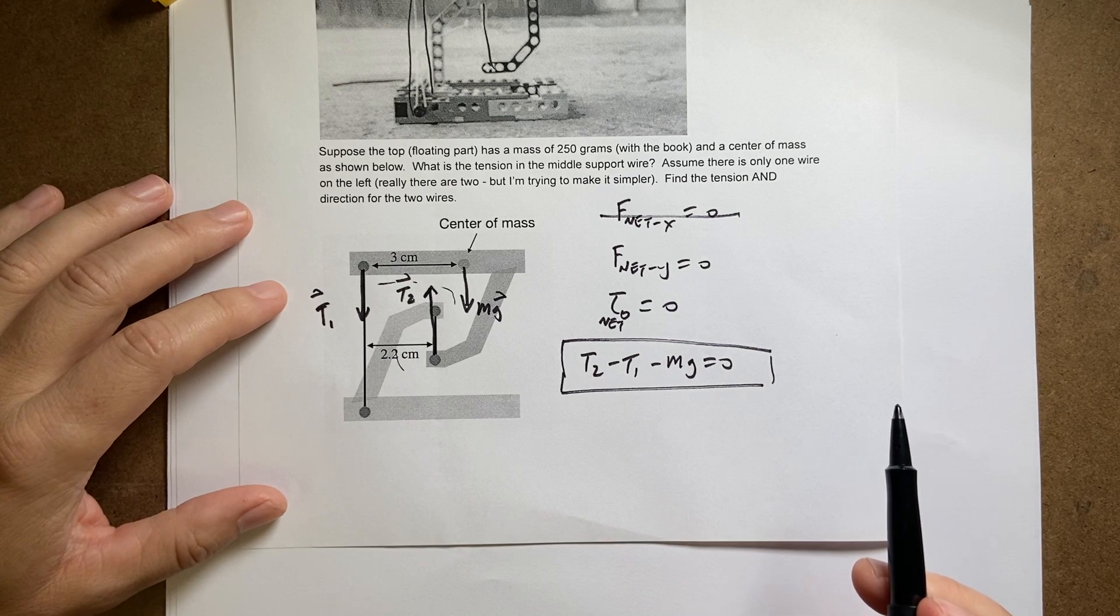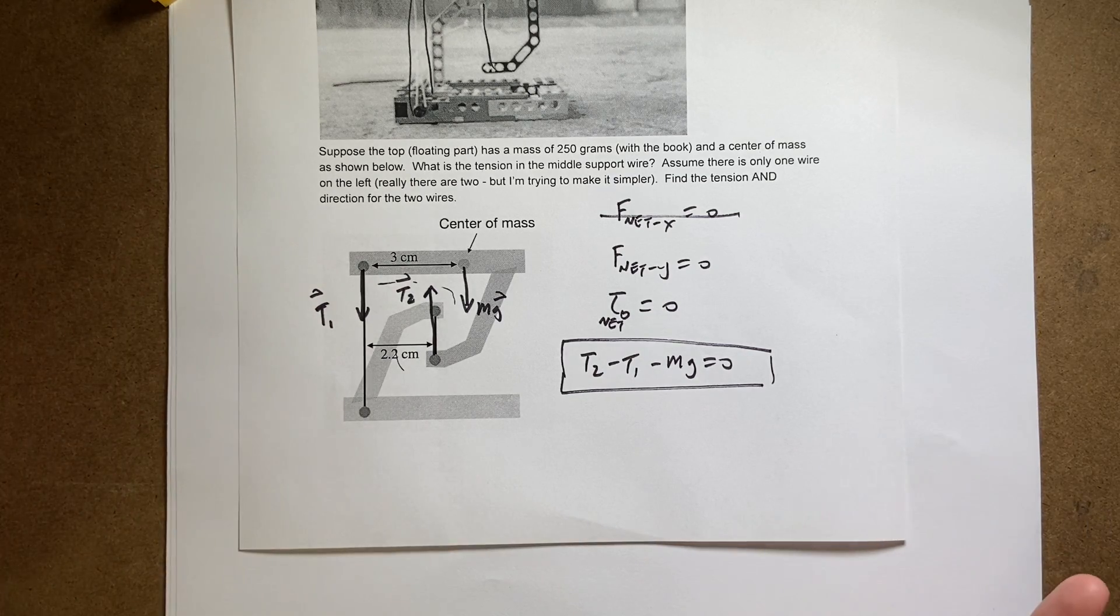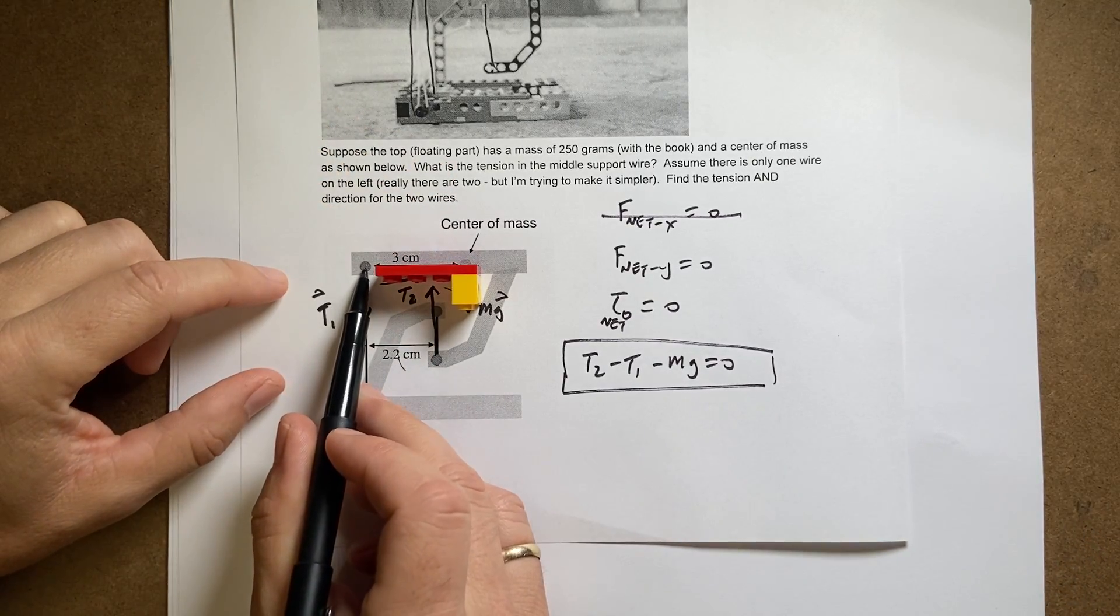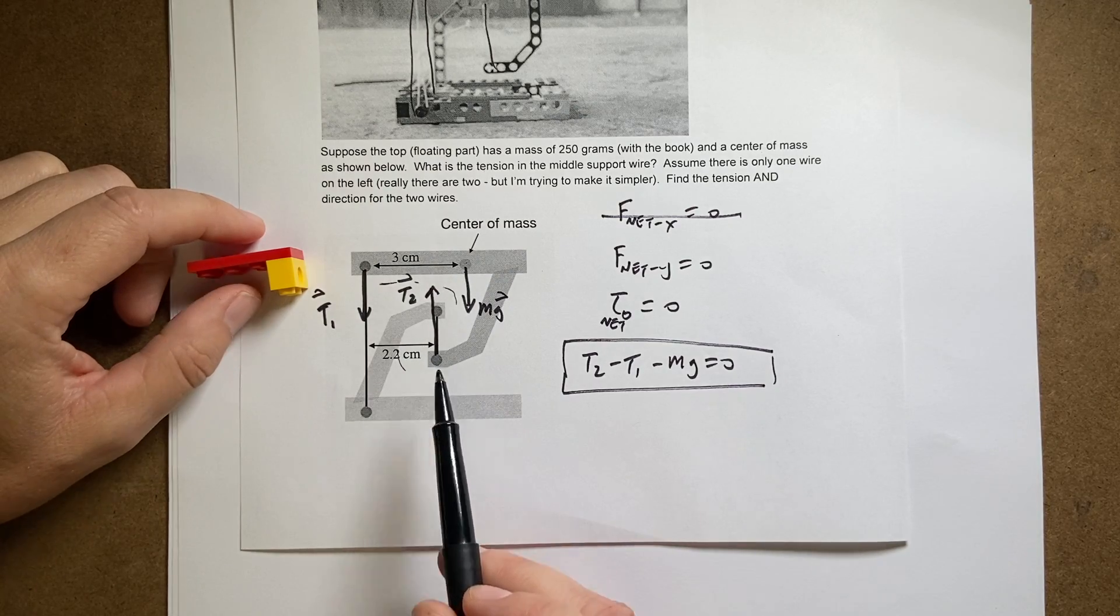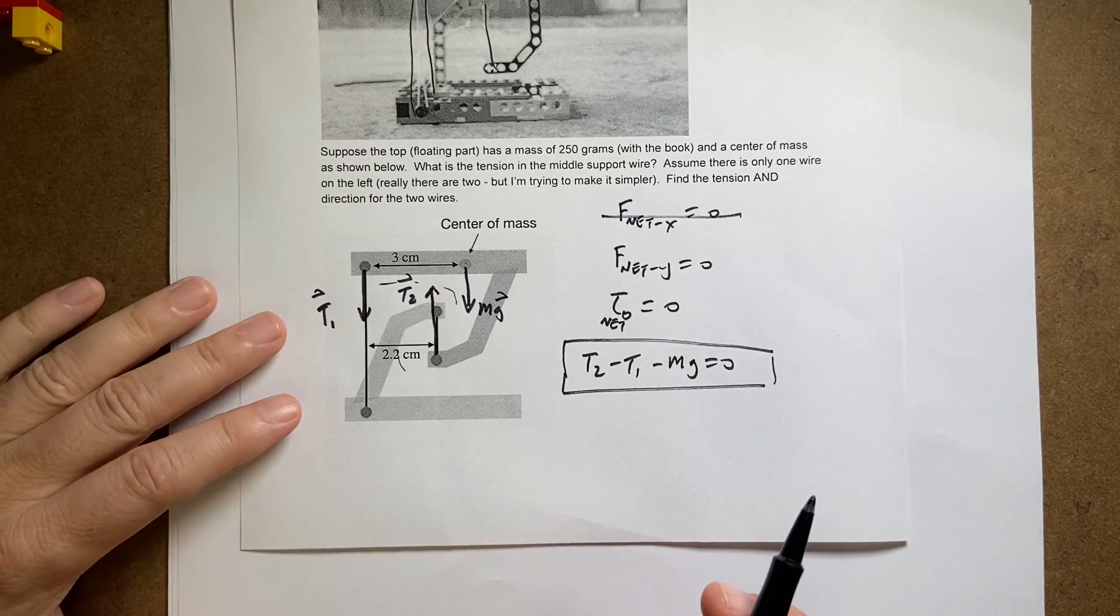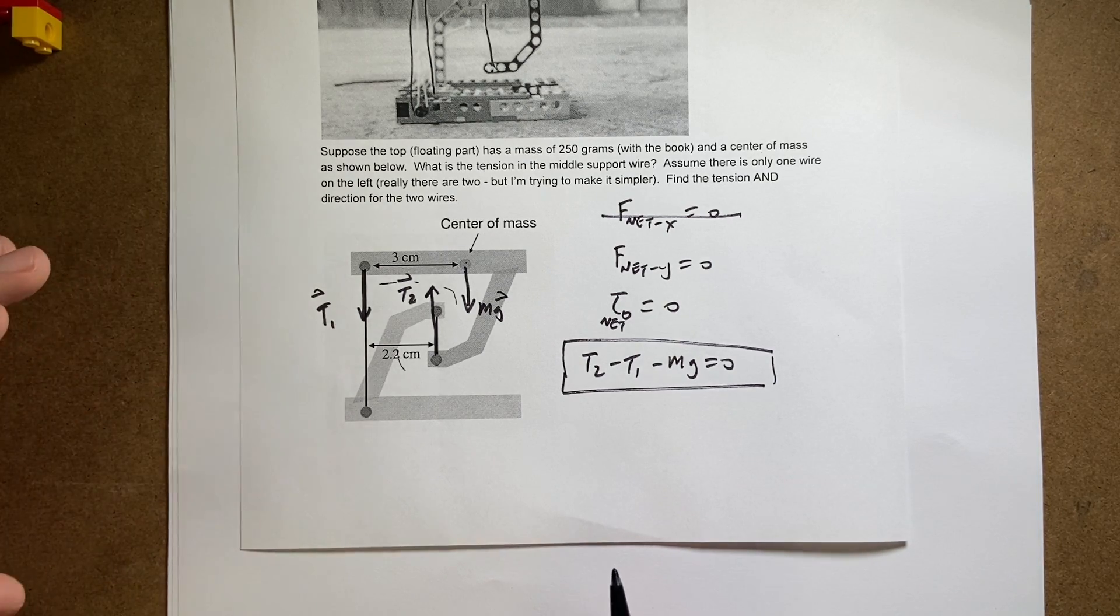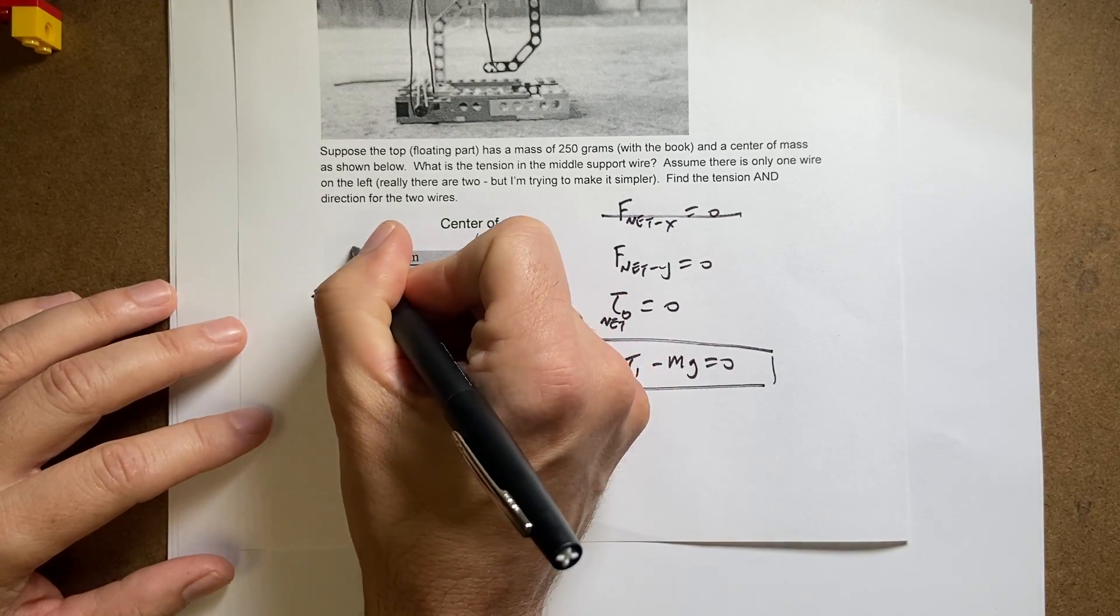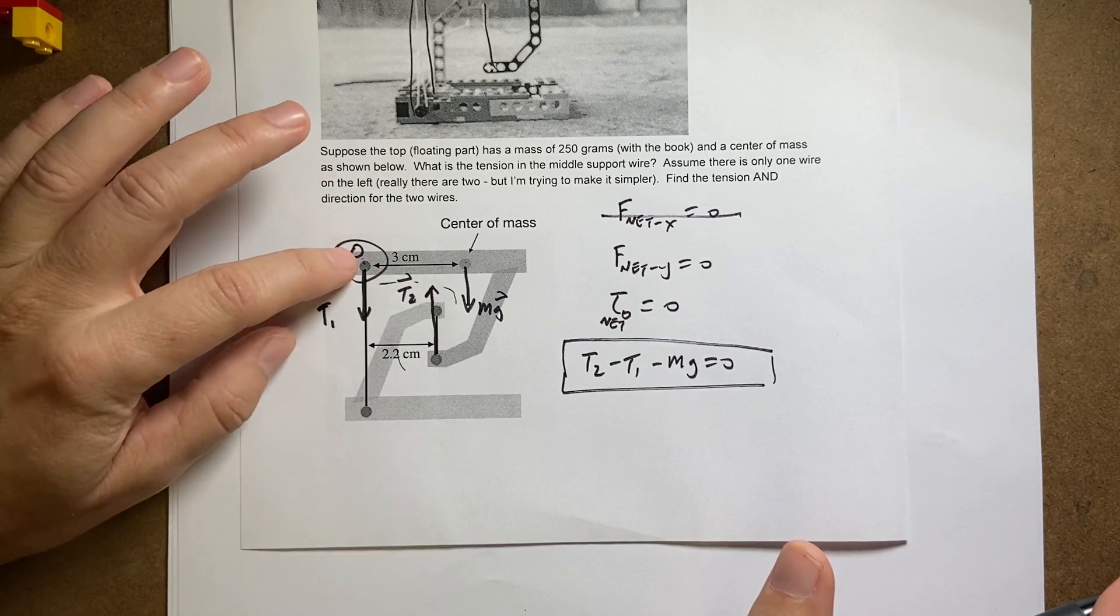The other thing I know is that the total torque has to be zero. Now, if this thing is not rotating, it's not rotating about this point. It's also not rotating about that point. It's also not rotating about this point. So you can actually pick whichever point that you want to calculate the torques. I'm going to pick something easy. I'm going to pick this point right here. It will work no matter where you pick it.